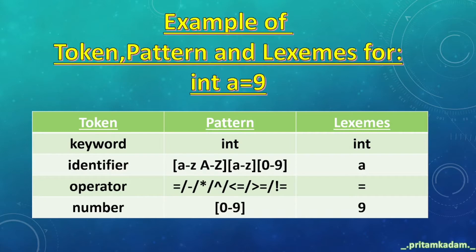Equals is an operator, so we write operator over there, and 9 is a number. The pattern for the int keyword will be int only, and the pattern for variable can be starting with character only and may contain character and integers afterwards. These are the operator patterns and numbers are given from 0 to 9.